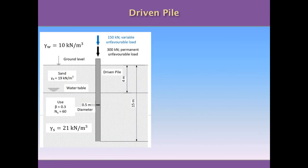This is a very simple problem. We have an isolated pile that is receiving two forces from the building: a 150 kN variable unfavorable load in blue, and a 300 kN permanent unfavorable load in black. The pile is 15 meters driven into the sand, and it has a half-meter diameter because it's a circular pile.